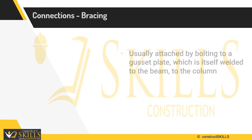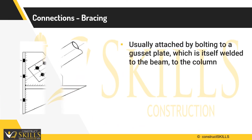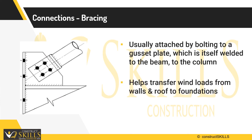Bracing is usually attached by bolting to a gusset plate, which is itself welded to the beam or to the column. It helps to transfer wind loads from walls and roof to foundations.